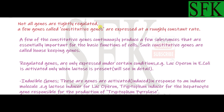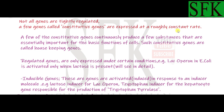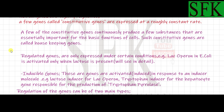Not all genes are tightly regulated. Tightly regulated means they are not completely switched off or switched on at a particular moment; rather, they continue to express their protein at a roughly constant rate. Such genes are called constitutive genes. Constitutive genes are those genes which are almost always expressed and are active at a roughly constant rate — their expression is not controlled as tightly as regulated genes.